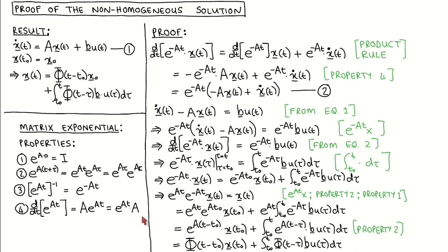The core idea of the proof is that we obtain an intermediate result, which we combine with the non-homogeneous state equation to eliminate x dot. We then manipulate things to make the state vector x of t the subject of the equation.